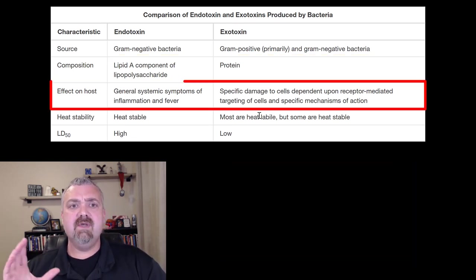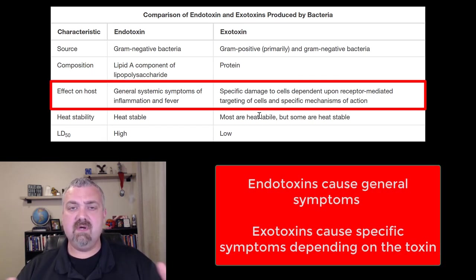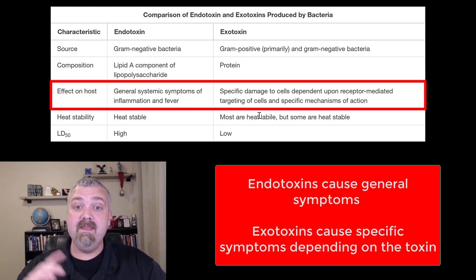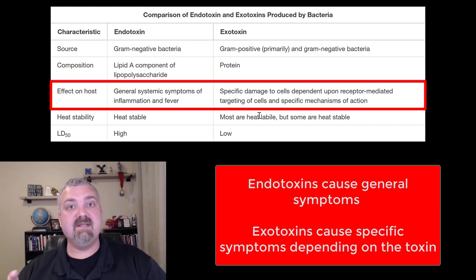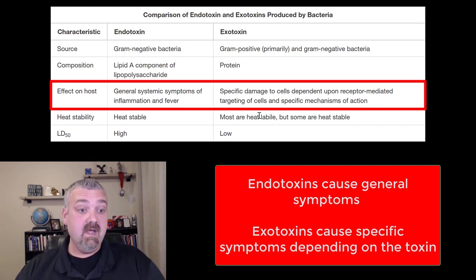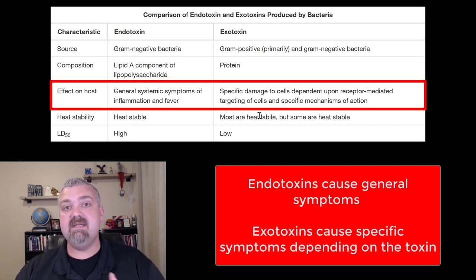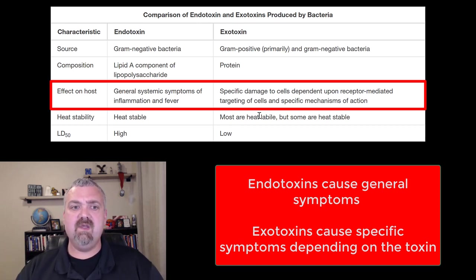Looking at the effect on the host: gram-negatives, because there is no specificity, cause very generalized symptoms — fever, inflammation, these types of things — generalized symptoms throughout the body. I think this is a very common source of inflammation, even in seemingly healthy people. Whereas the exotoxins produced by gram-positives are specific. There are superantigen exotoxins that cause a massive inflammatory and immune response that can be fatal, and membrane-disrupting toxins, among different types. So it's specific depending on the toxin and the organism.